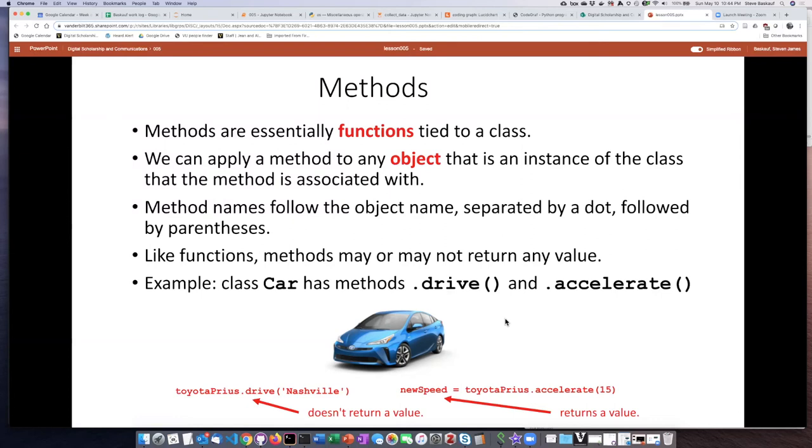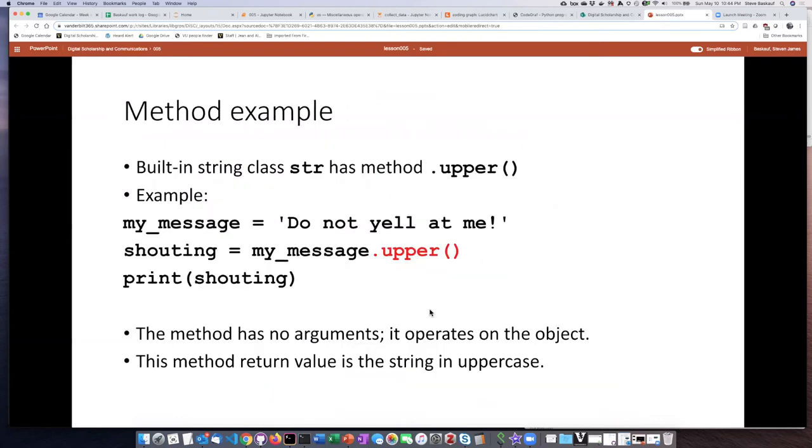We've already spent some time working with the built-in string class, and there are actually several methods that are associated with the string class. One of them is the method dot upper. So what the upper method does is it takes any member of the string class and turns all of the alphabetic characters into uppercase.